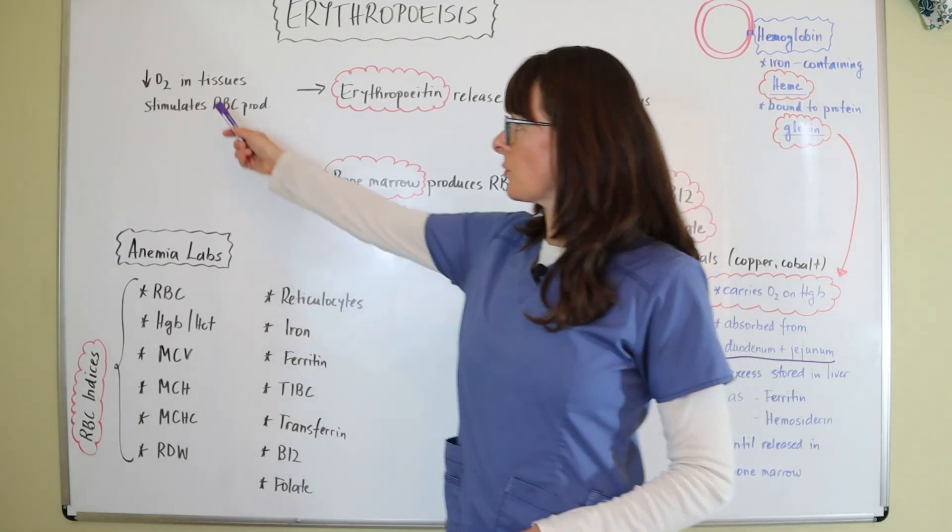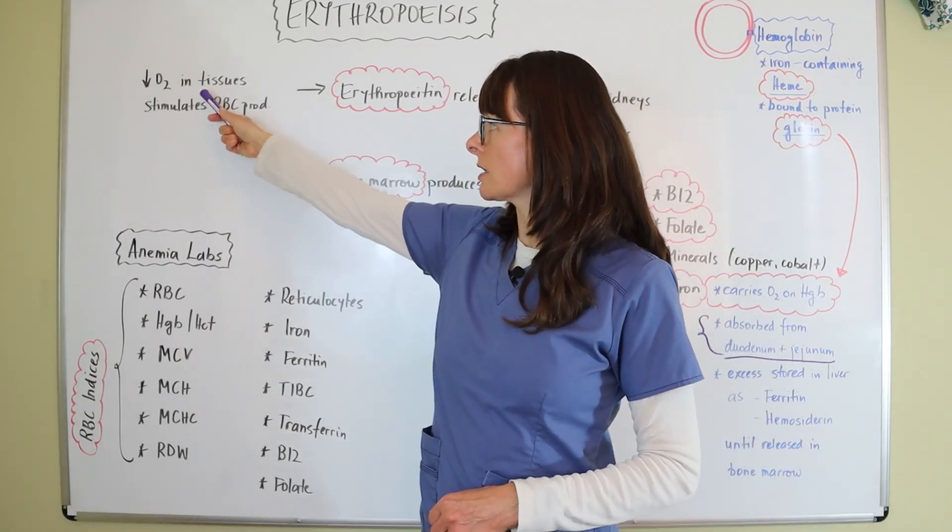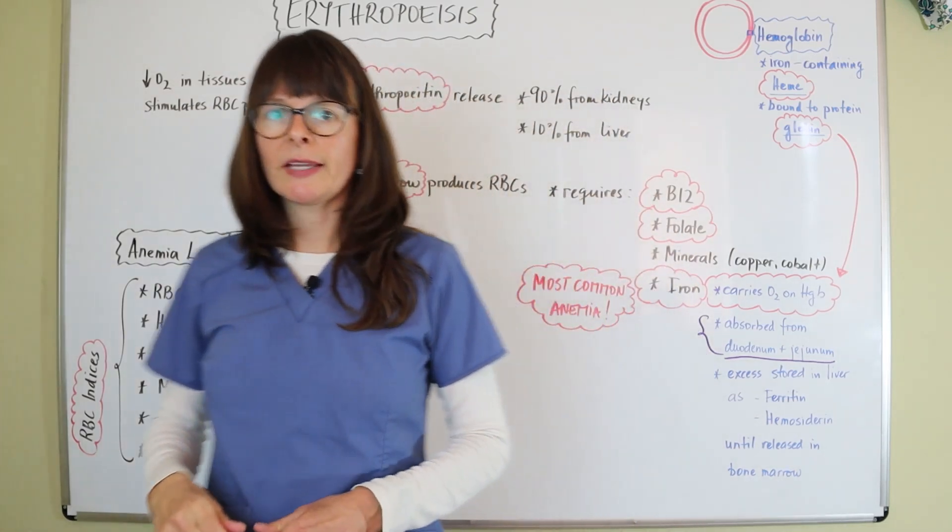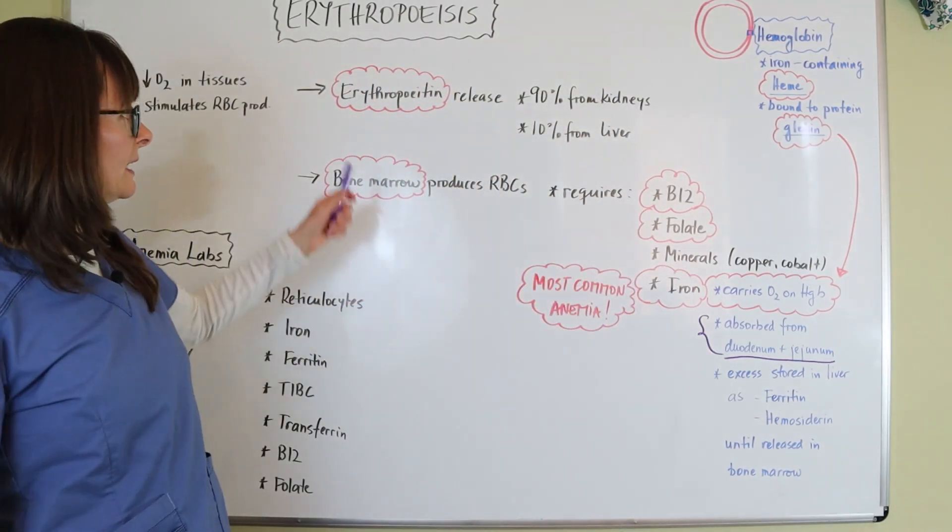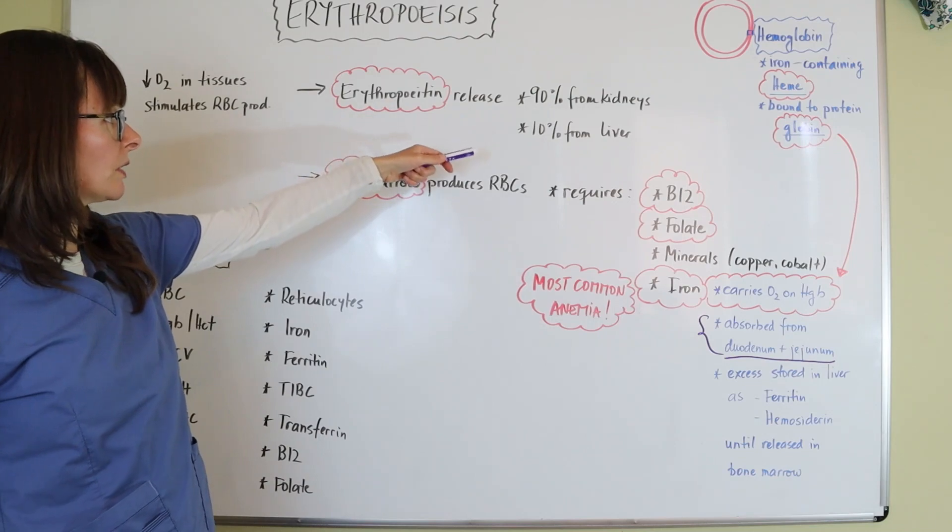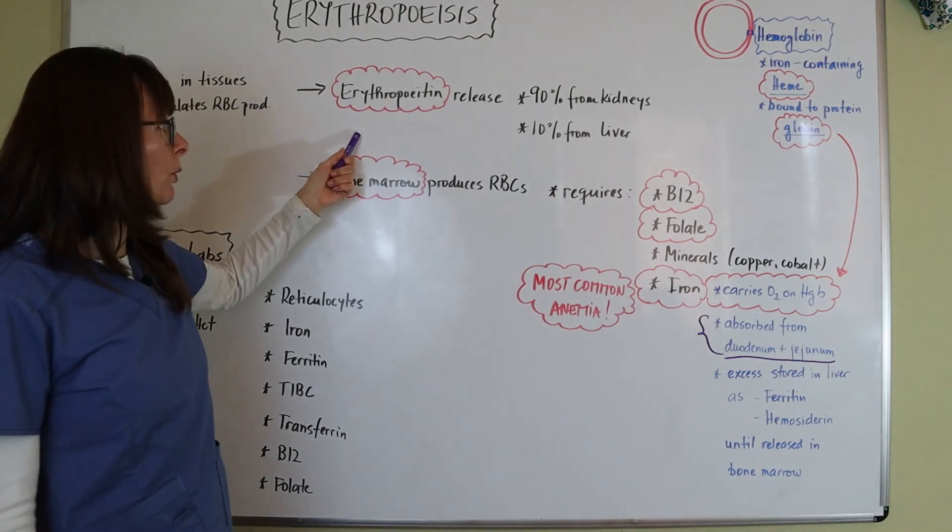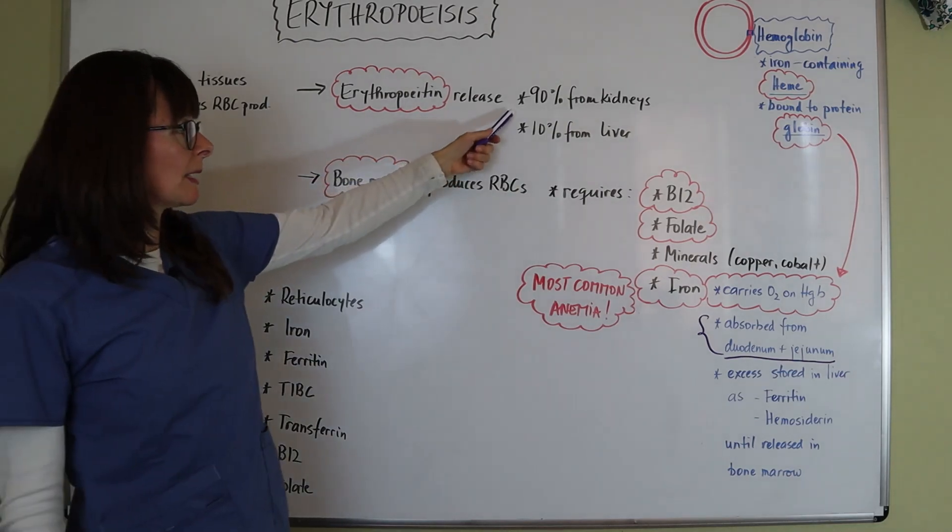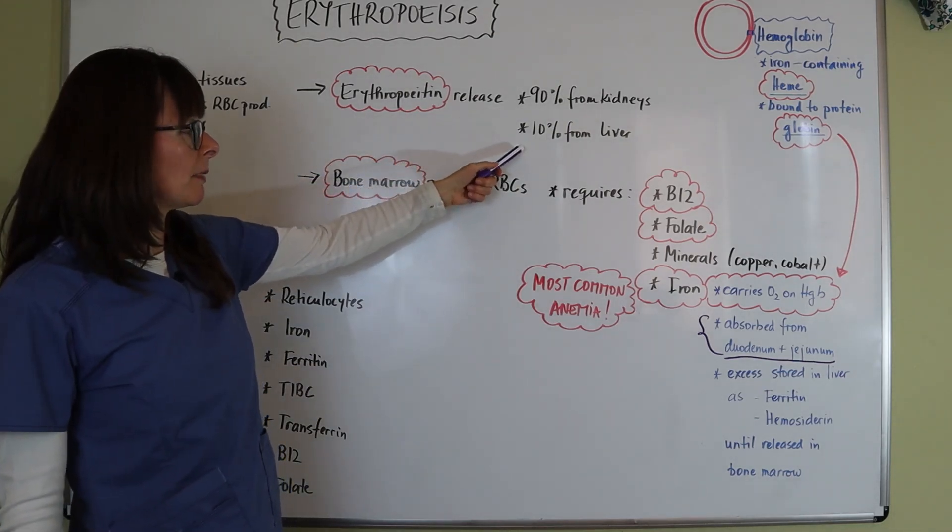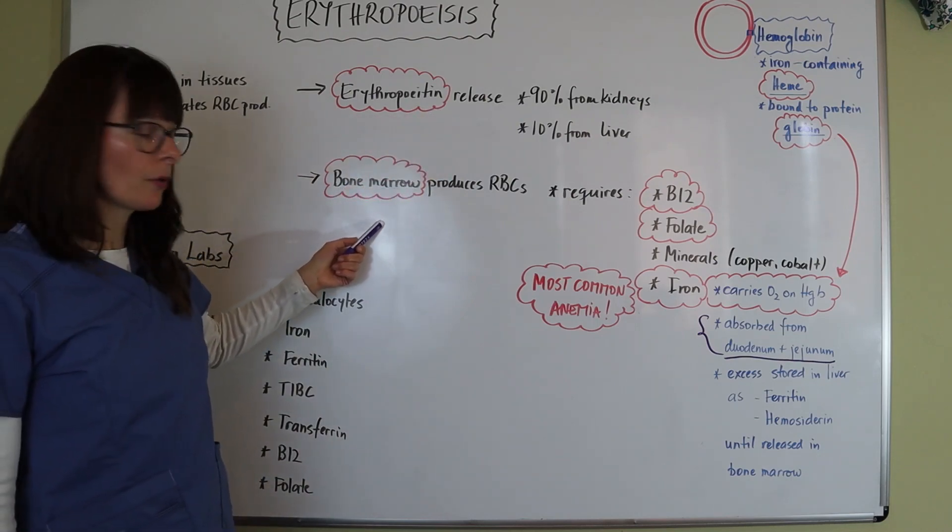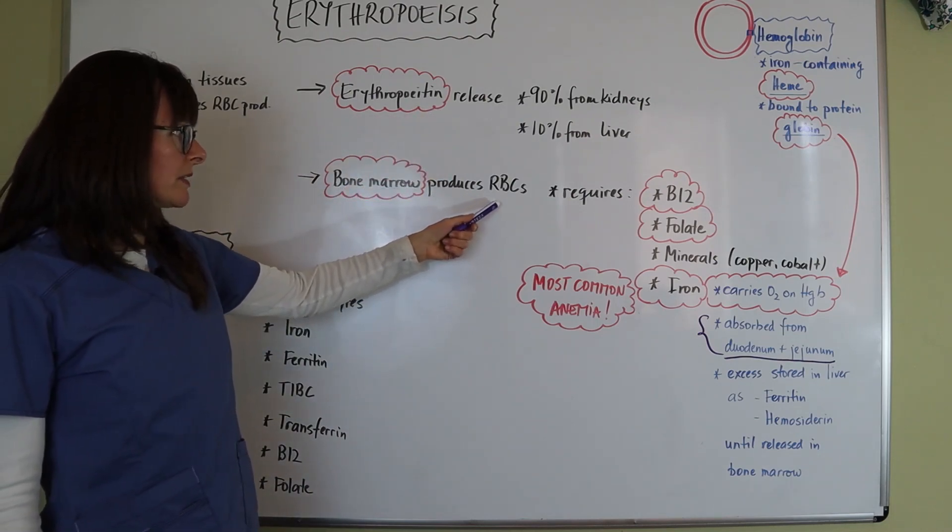When there's a decrease detected in oxygen in the tissues, red blood cell production gets stimulated. When that gets detected by the kidneys and or the liver, they release this hormone called erythropoietin, 90% from the kidneys, 10% from the liver. However, this erythropoietin then stimulates the bone marrow to produce red blood cells.